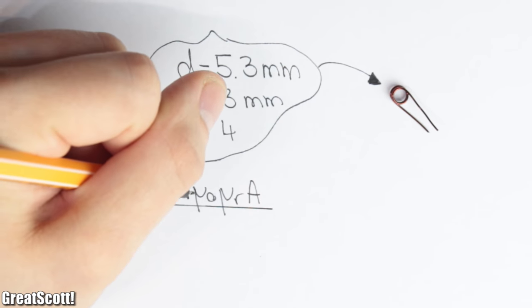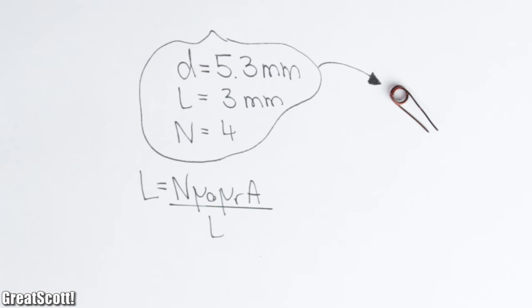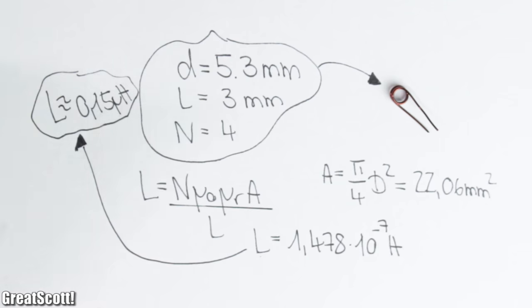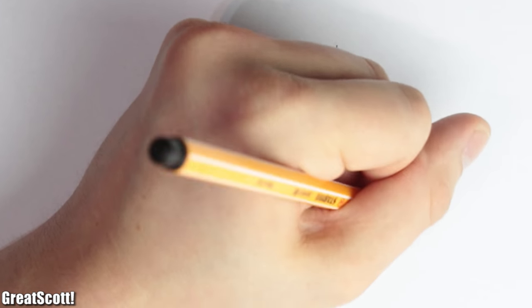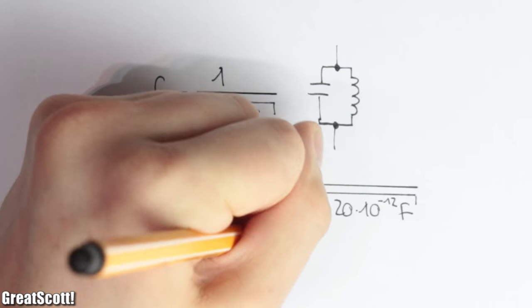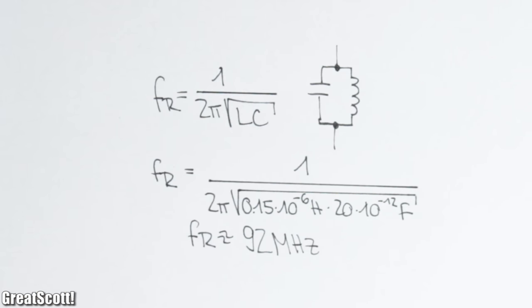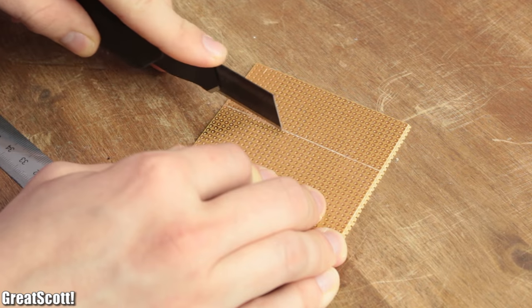The inductance can be calculated with an approach formula, which gives me a value of around 0.15 microhenry. And by assuming a capacitance of, let's say, 20 pF, we get a resonance frequency of 92 MHz, which seems legit. So we can start to solder.